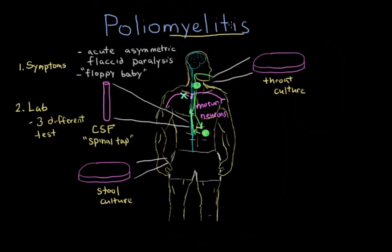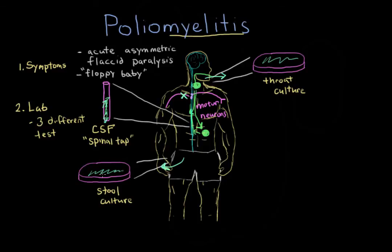As a reminder, 'myelitis' means inflammation in the spine, so if you can isolate the virus in the CSF, that confirms your diagnosis. But also, because the virus can be shed through the mouth and in the feces, you can collect stool cultures or throat cultures as well. Stool cultures are one of the cheapest methods and are fairly accurate — more accurate than throat cultures — in determining if a person is infected by the poliovirus, so stool cultures are fairly commonly used.